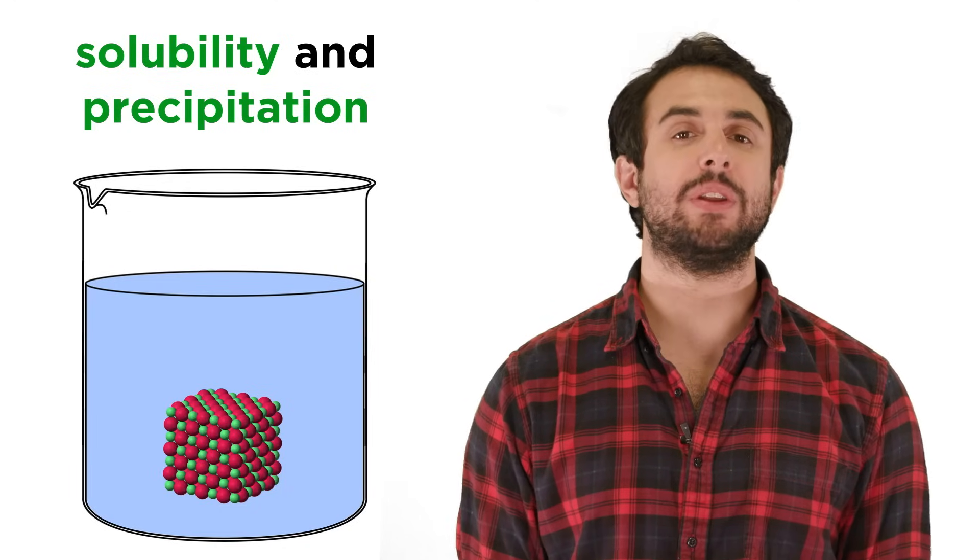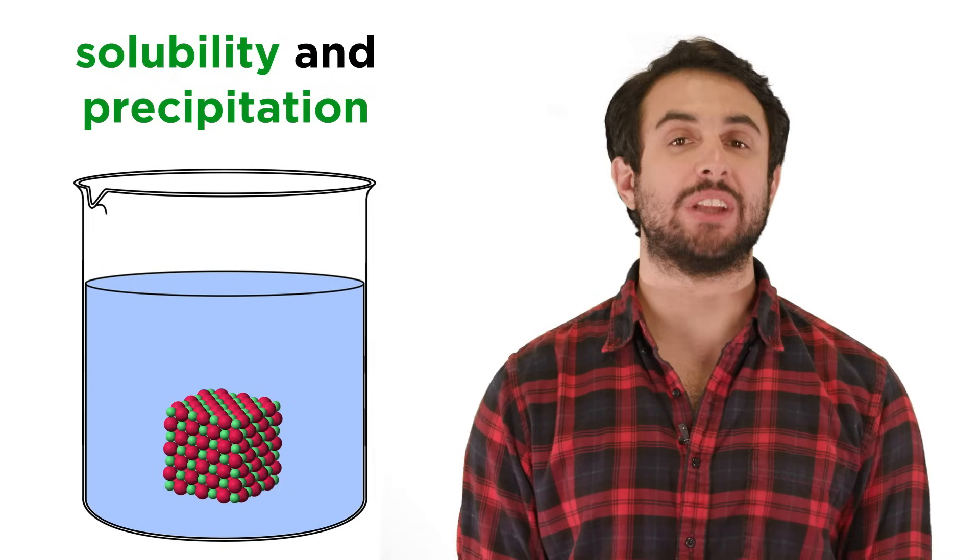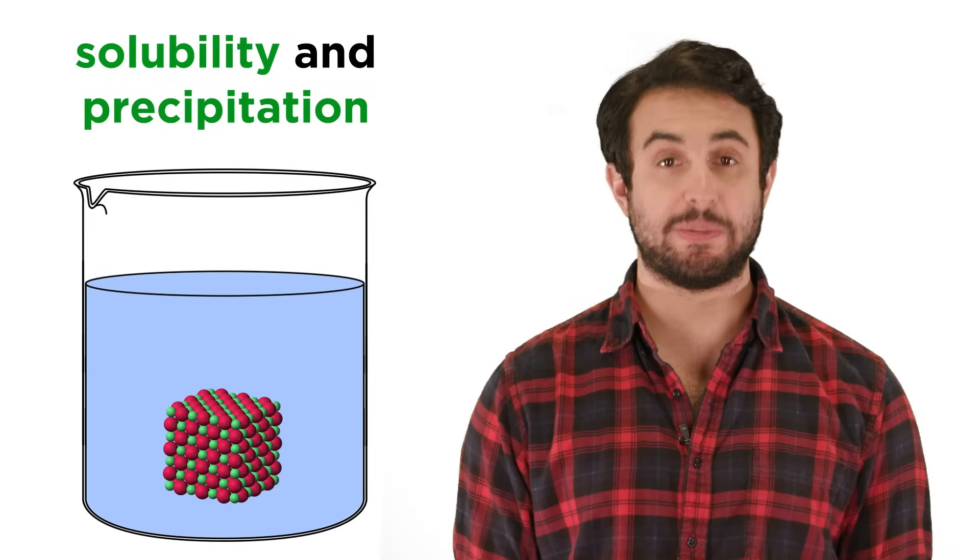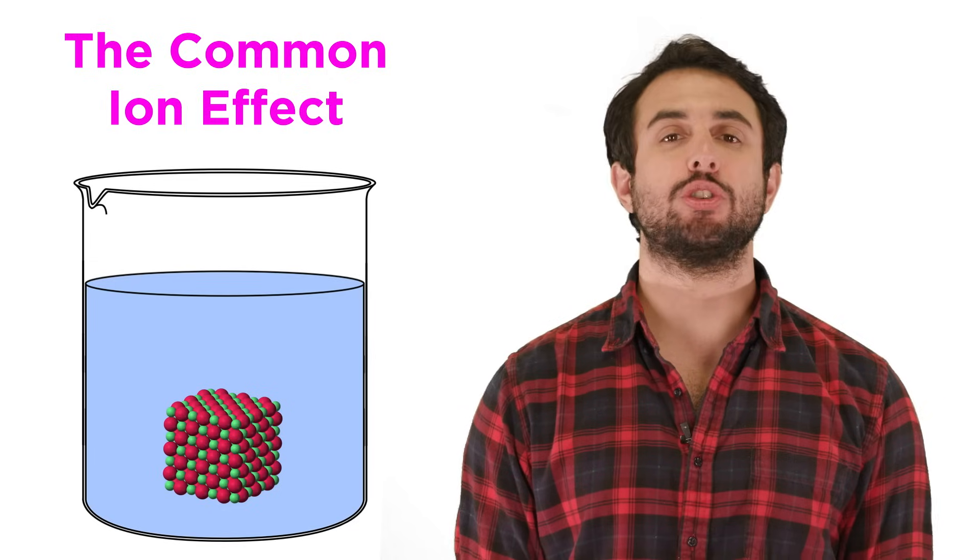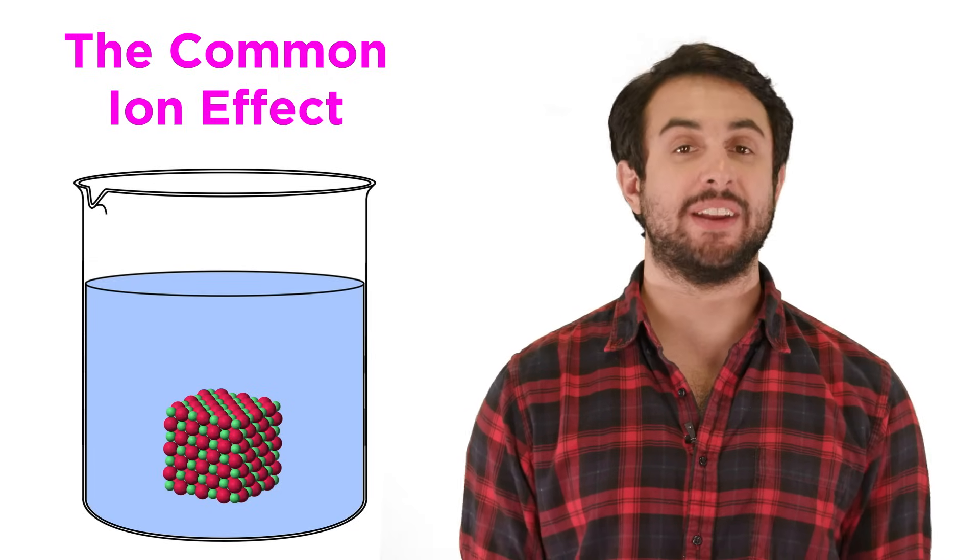As we continue to learn about solubility and precipitates, we are beginning to understand ways that we can predict, or even control, precipitation. One such approach we must understand involves something called the common ion effect.